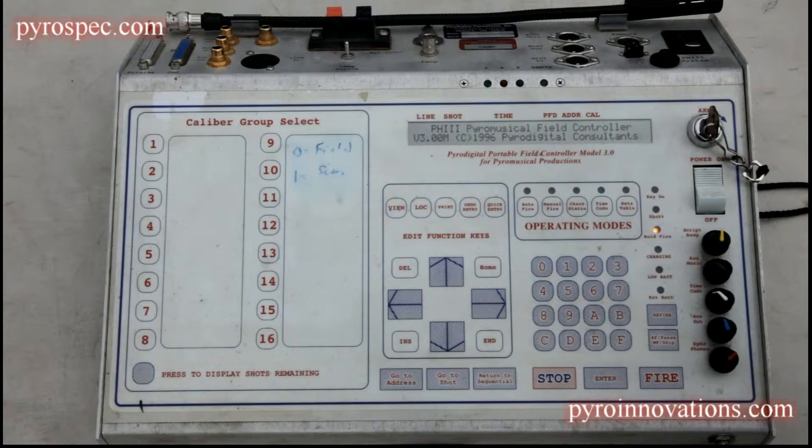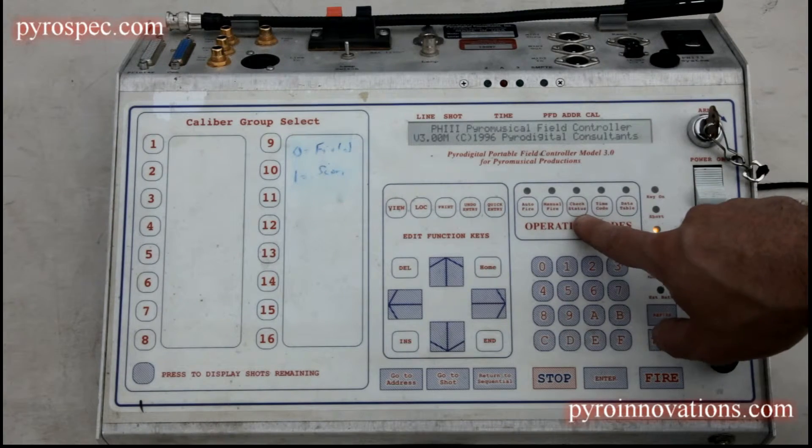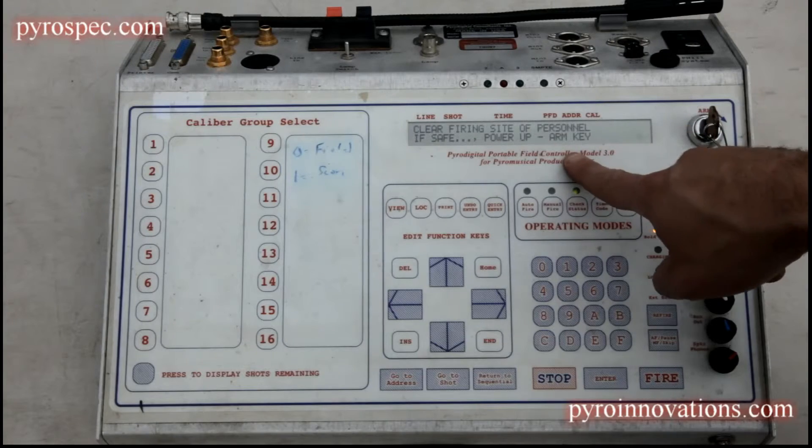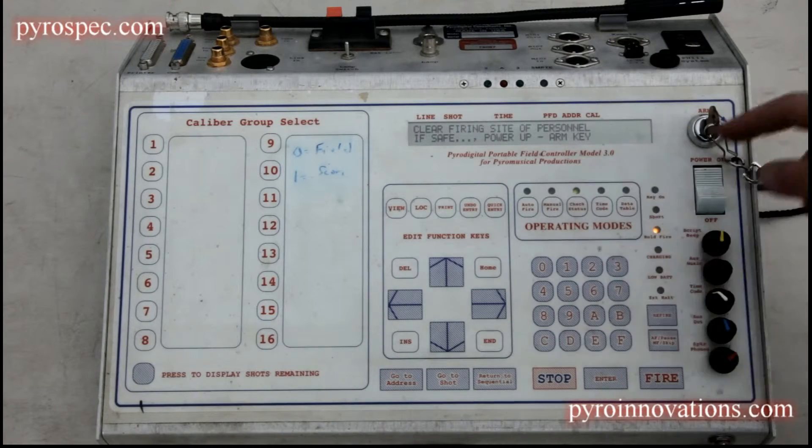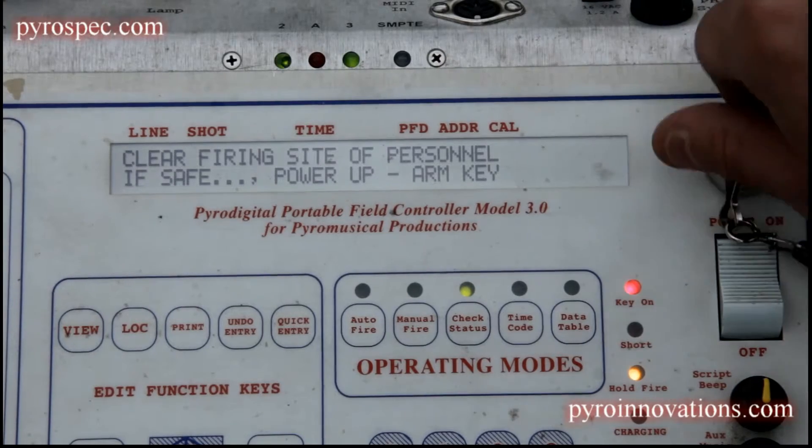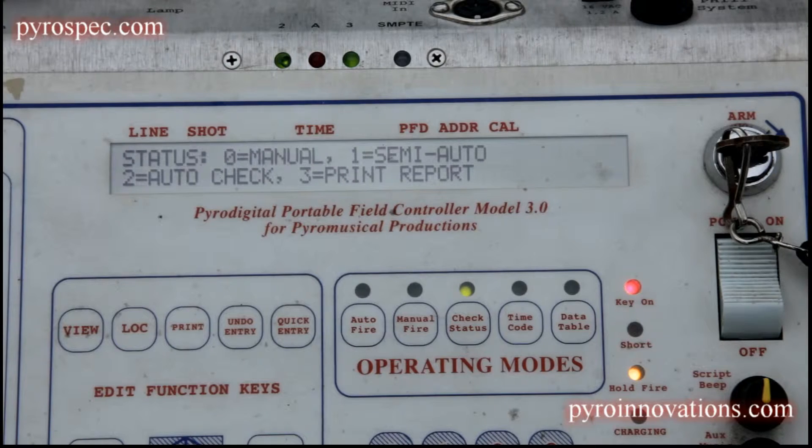Then we're going to go to check status, which is the middle button here. It's going to tell you to make sure your firing site is clear before you turn the army key. Once you've ensured that your site is clear, go ahead and arm the system by turning the key.